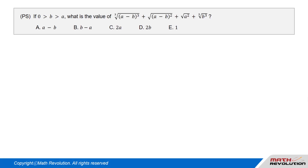Question. If 0 is greater than b, which is greater than a, what is the value of cube root of whole cube of a minus b, plus square root of whole square of a minus b, plus square root of a squared, plus cube root of b cubed?